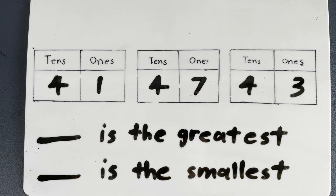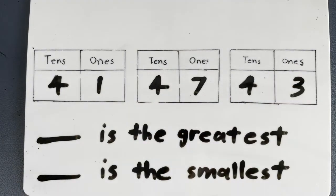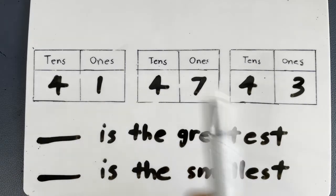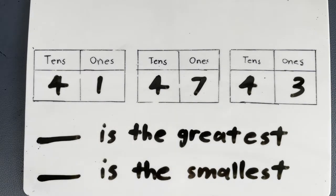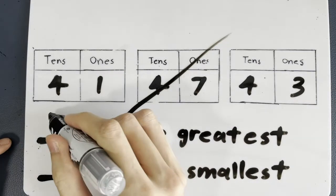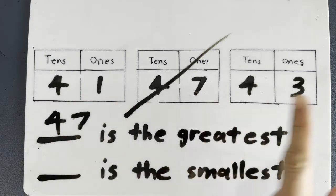So what do we do when all the tens are the same? We look at the ones. So which of the ones is the greatest — is it 1, 7, or 3? It's 7! So 47 is the greatest. When all the tens are the same, look at the ones.